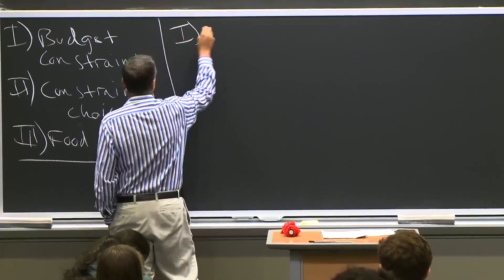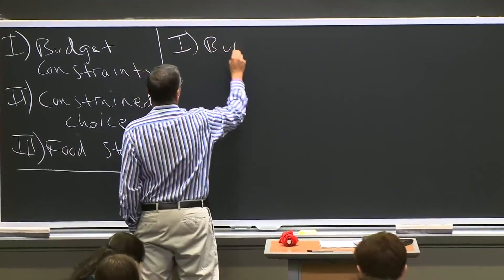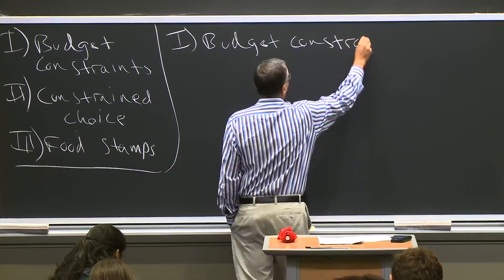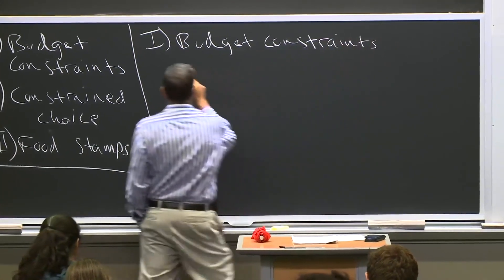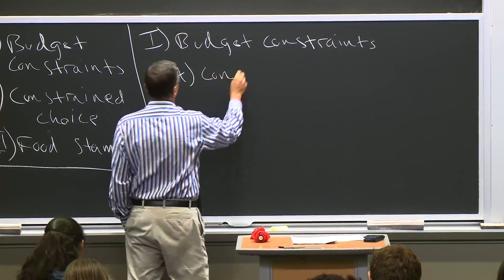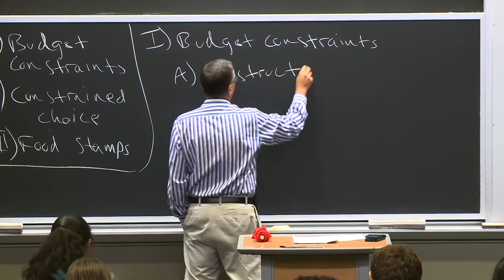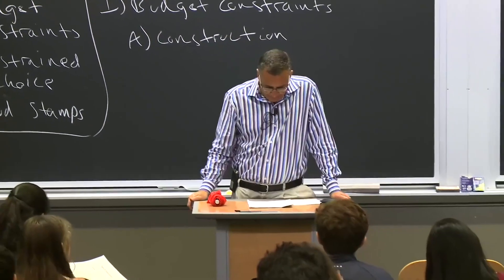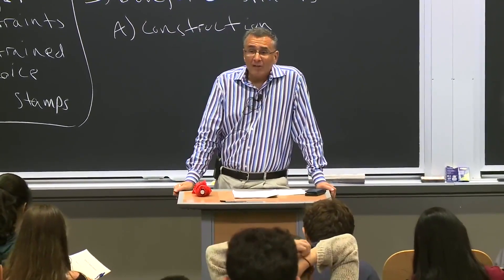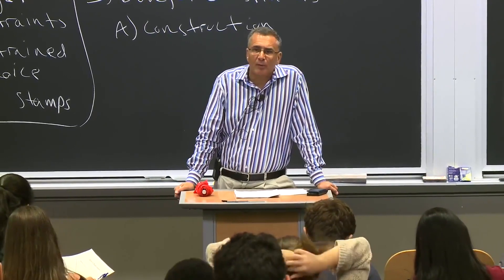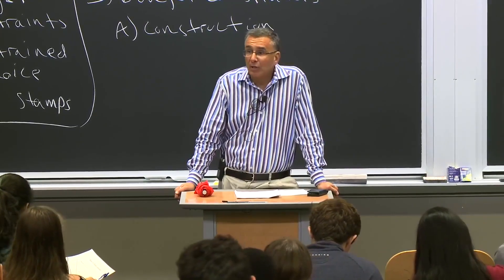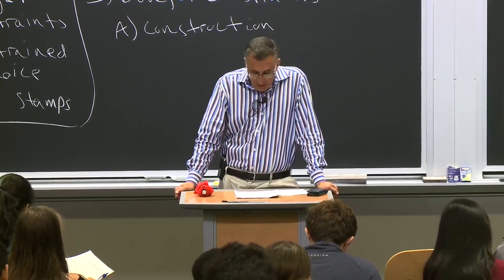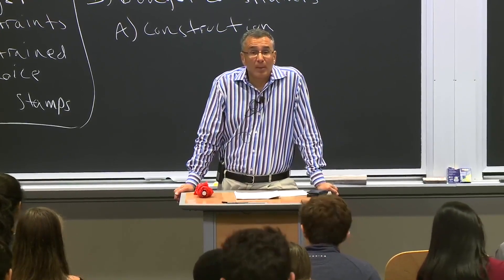Let's start by talking about budget constraints and their construction. Last time we talked about the fundamental axiom of consumer choice — that more is better. So what stops people from just binging on everything? It's their budget constraint; it's their limited resources.